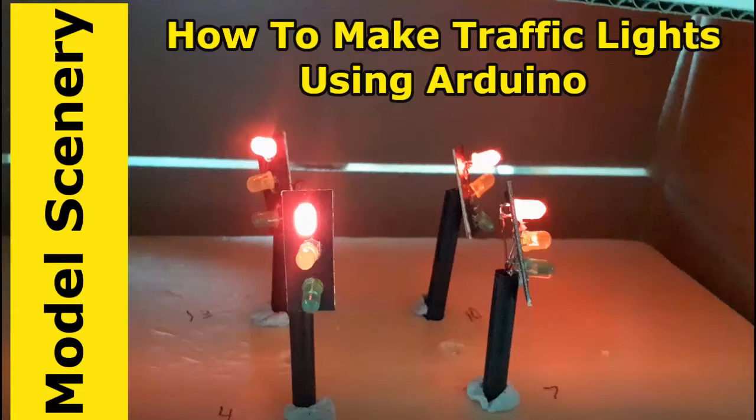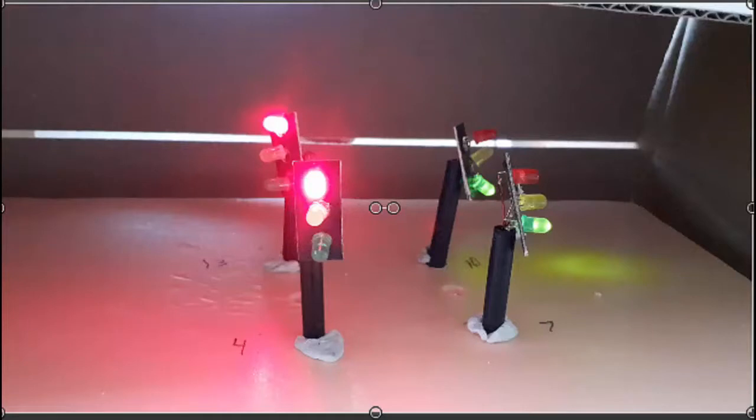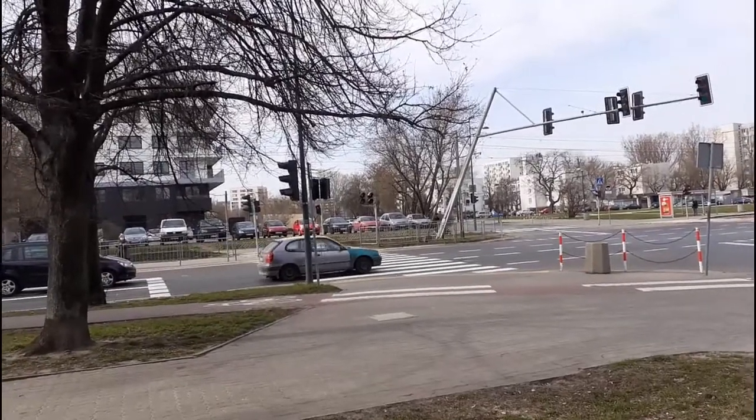In this video, I will show you the operation of Arduino-controlled traffic lights at a crossing intersection of roads. The lights are modeled after an intersection about a kilometer from my flat.